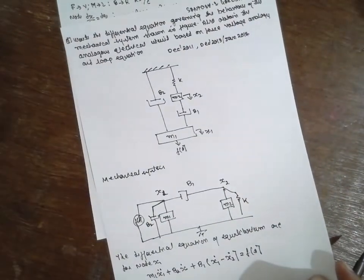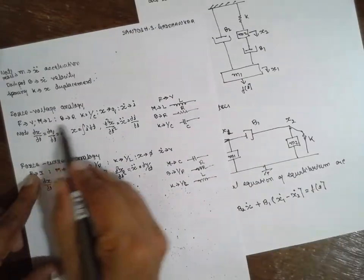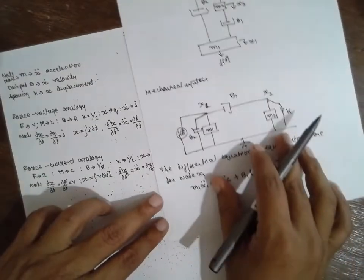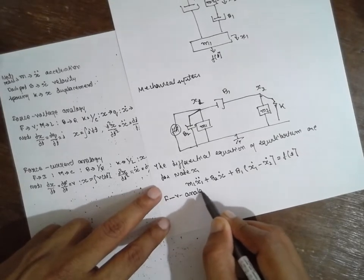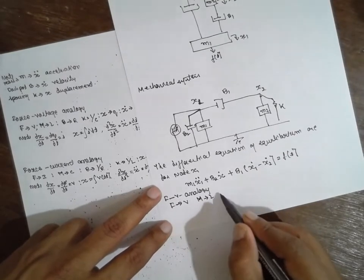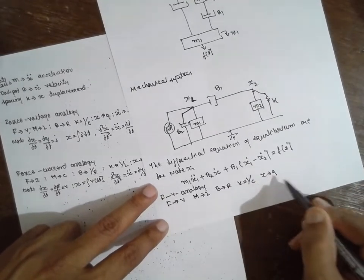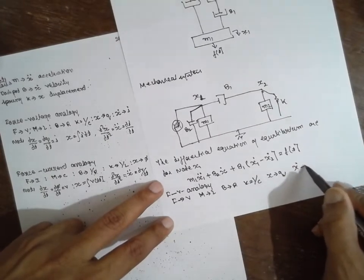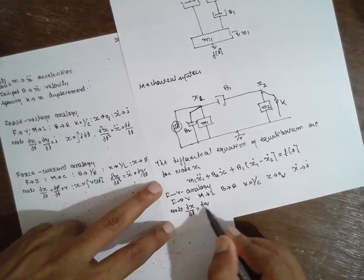Now, replace everything with the help of this force voltage analogy. I will write the node here. I will write everything as it is. Force voltage analogy. Where F has to replace with voltage, M has to replace with inductance, B with R, K is equal to 1 by C, X by Q. Note: DX by DT is equal to DQ by DT, which is I.